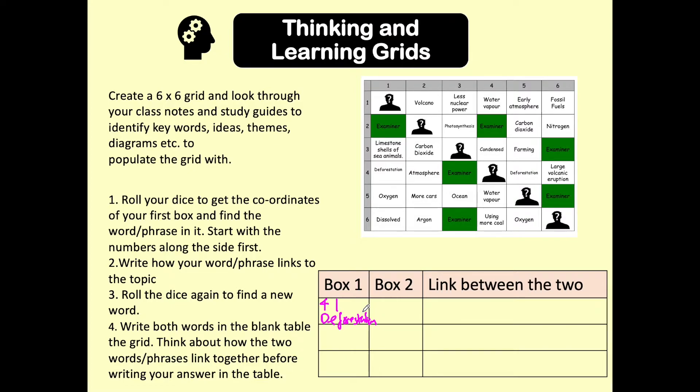We then roll our dice again and we end up getting 1,6. And this is fossil fuels. We know that fossil fuels are formed over millions of years from dead organisms, which have had a lot of pressure and heat applied to them underneath the Earth's surface. We use this for a lot of things. So crude oil is an example and from that we get a lot of our fuels such as petrol, diesel, kerosene, etc.